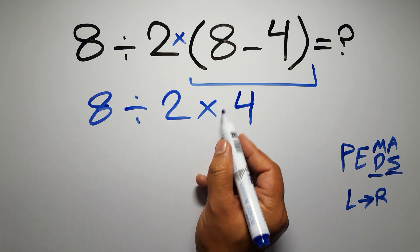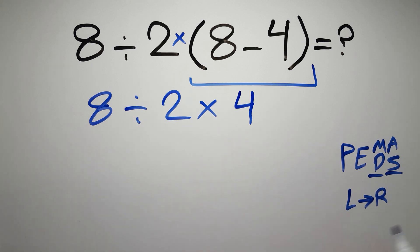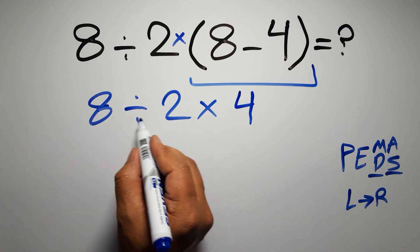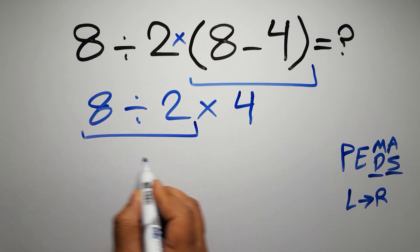Now we have one division and one multiplication. As I said, multiplication and division have equal priority, and we have to work from left to right. So here, first we have to do this division. 8 divided by 2 equals 4.